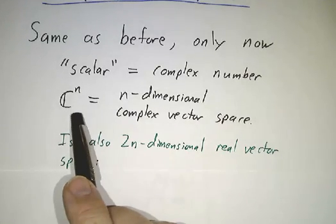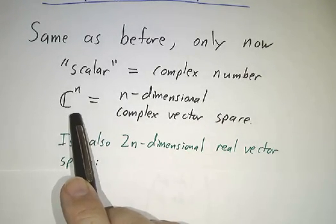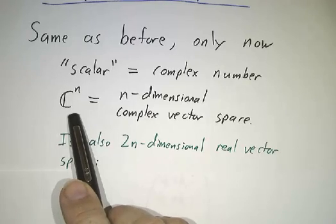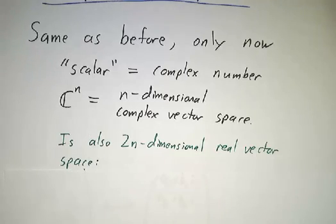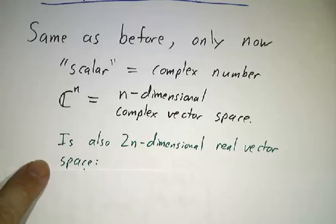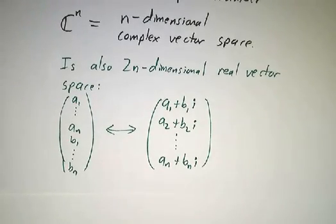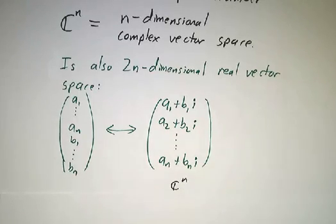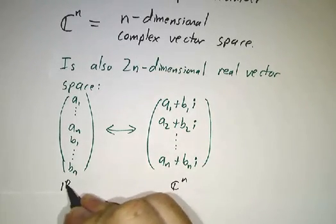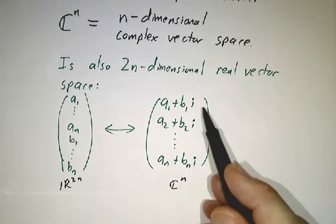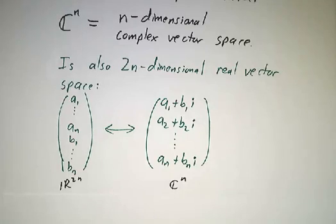But it's also a two-n-dimensional real vector space. Anytime you have a complex vector space, if it makes sense to multiply by an arbitrary complex number, it makes sense to multiply by an arbitrary real number, because a real number is a special kind of complex number. So every complex vector space is also a real vector space of twice the dimension. Here is Cⁿ. Here is R²ⁿ. If you give me two n real numbers, I can make n complex numbers out of them.